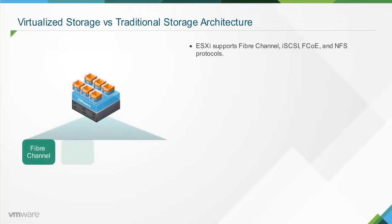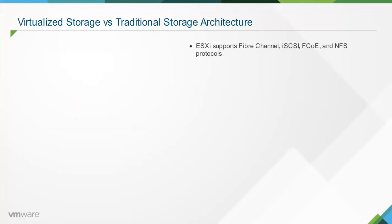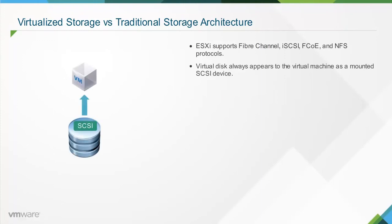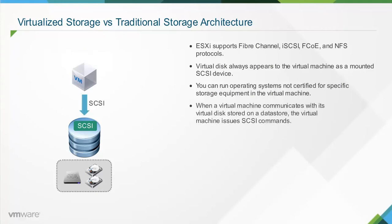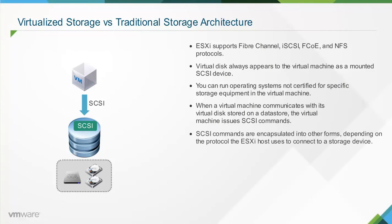ESXi supports Fiber Channel, iSCSI, FCoE, and NFS protocols. Regardless of the type of storage device the host uses, the virtual disk always appears to the virtual machine as a mounted small computer system interface, or SCSI, device. The virtual disk hides the physical storage layer from the virtual machine's operating system, allowing you to run operating systems not certified for specific storage equipment such as SAN in the virtual machine. When a virtual machine communicates with its virtual disk stored on a data store, it issues SCSI commands, which are encapsulated into other forms depending on the protocol the ESXi host uses to connect to the storage device.